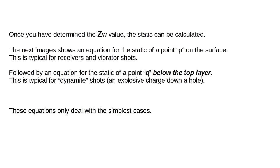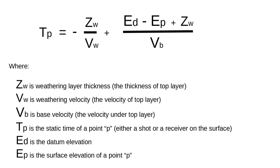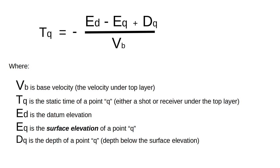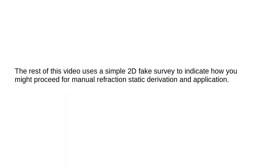Once you have determined the weathering thickness value, the static can be calculated. The next images show an equation for the static of a point P on the surface — typical for receivers and vibrator shots — followed by an equation for a static at point Q below the top layer, typical for dynamite shots and explosive charges down a hole. These equations only deal with the simplest cases. The rest of this video uses a simple 2D fake survey to indicate how you might proceed for manual refraction static derivation and application.